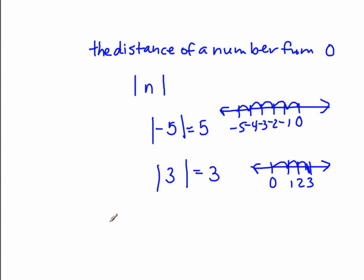So absolute value will always be positive. And you can even find absolute value of fractions. So the absolute value of negative three-fifths is three-fifths away from zero. Absolute value of six-sevenths is six-sevenths.